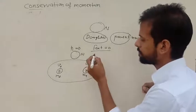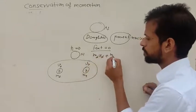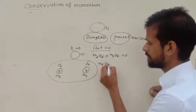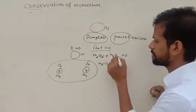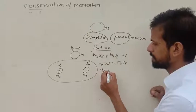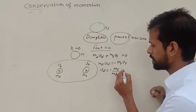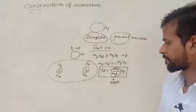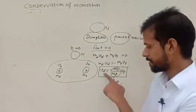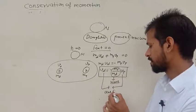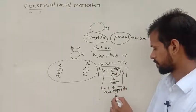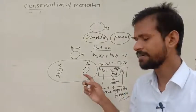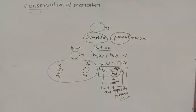We can write MD × VD plus MP × VP equals zero, which gives MD × VD equals minus MP × VP. Therefore VD equals minus (MP/MD) × VP. Here the negative sign indicates that these two velocities are opposite to each other, meaning the daughter nucleus moves in the opposite direction to the parent nucleus. That's all about conservation of momentum.